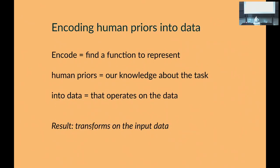What are some other priors? Things you know about the world: you have five fingers on one hand; energy is usually conserved — that's an important one for a neural network to know. All kinds of physical priors.